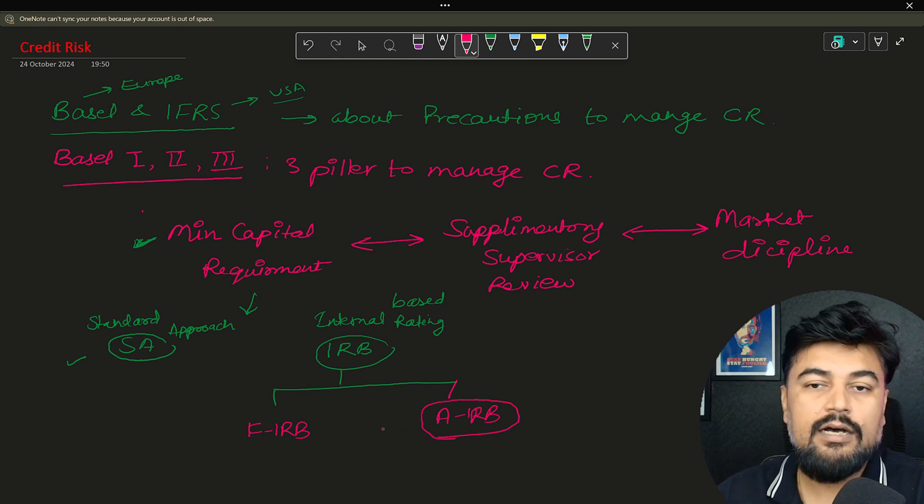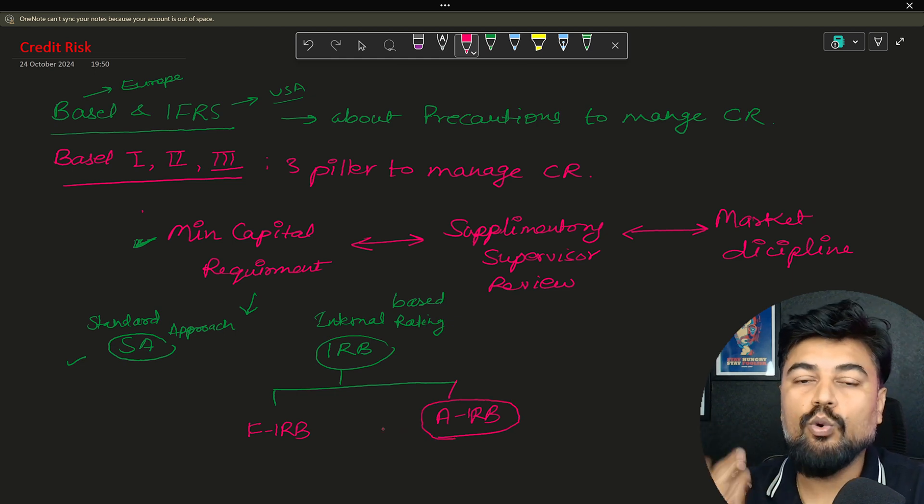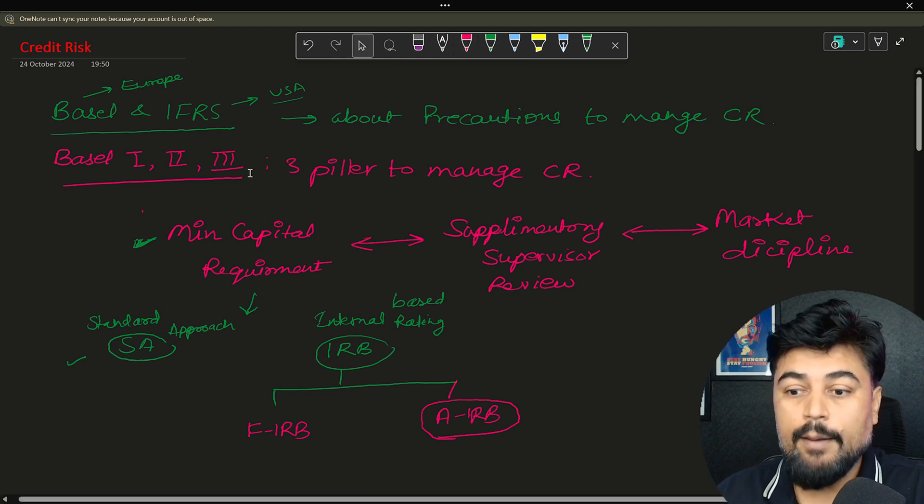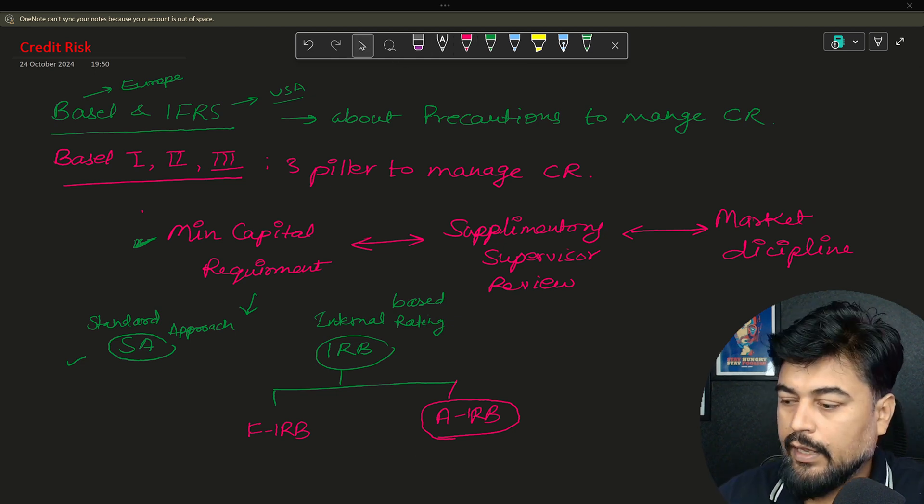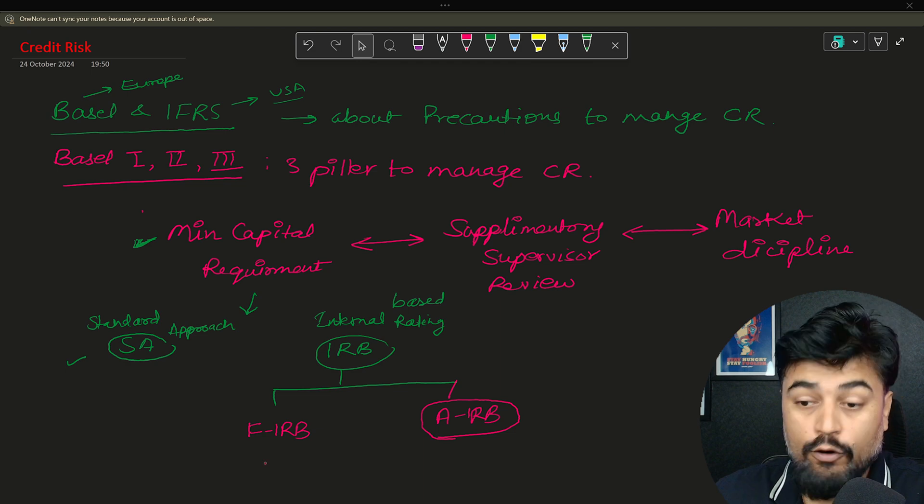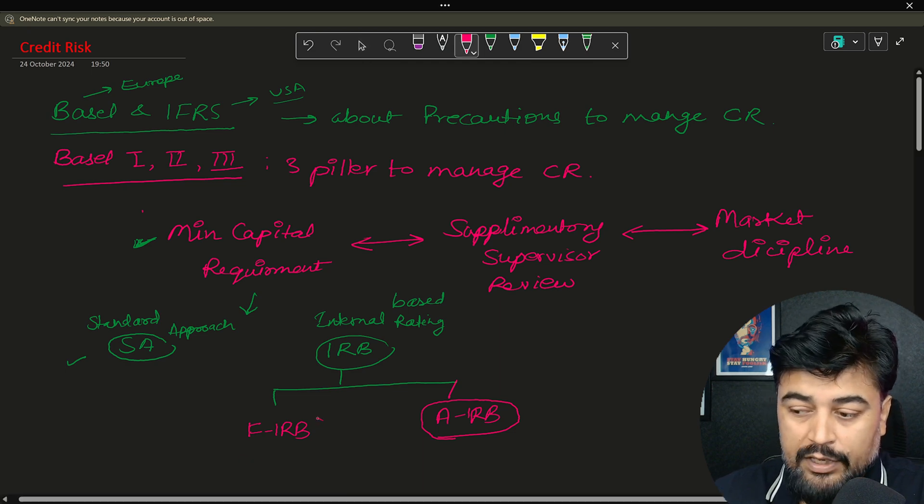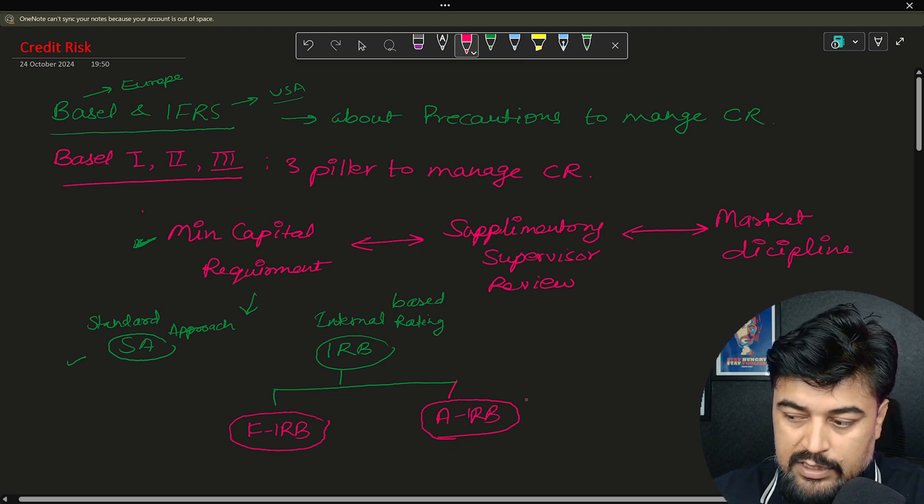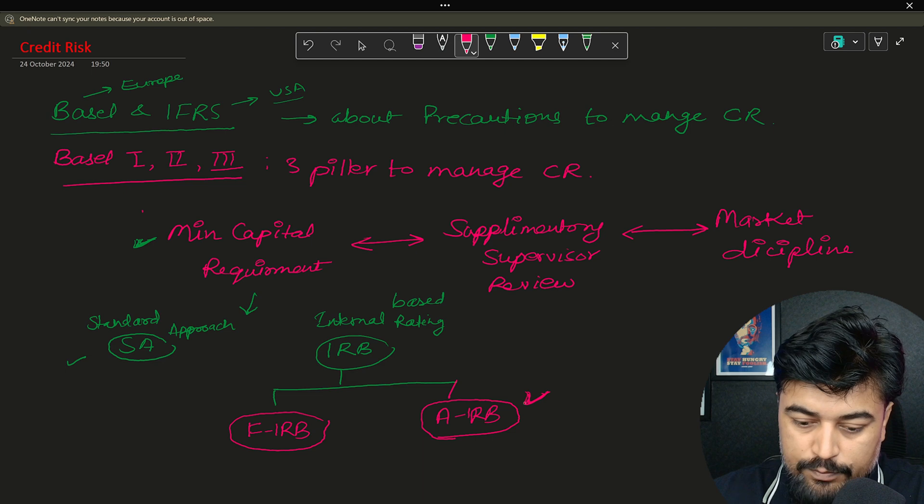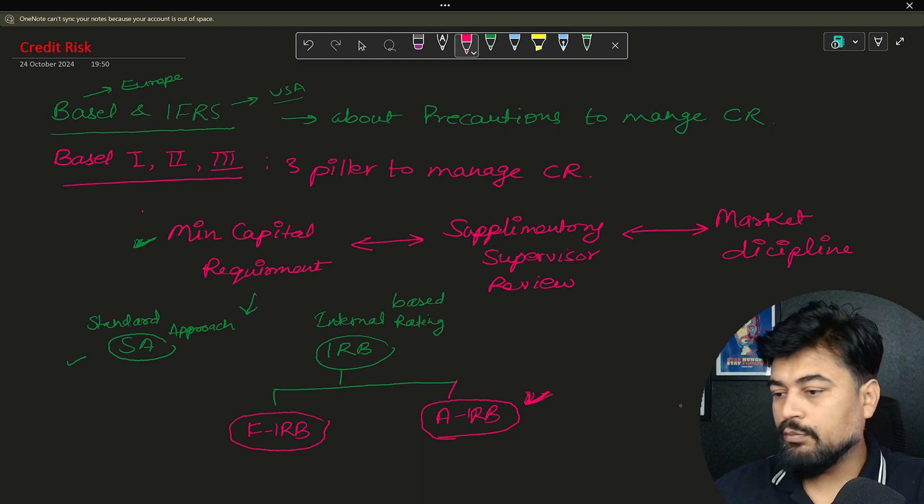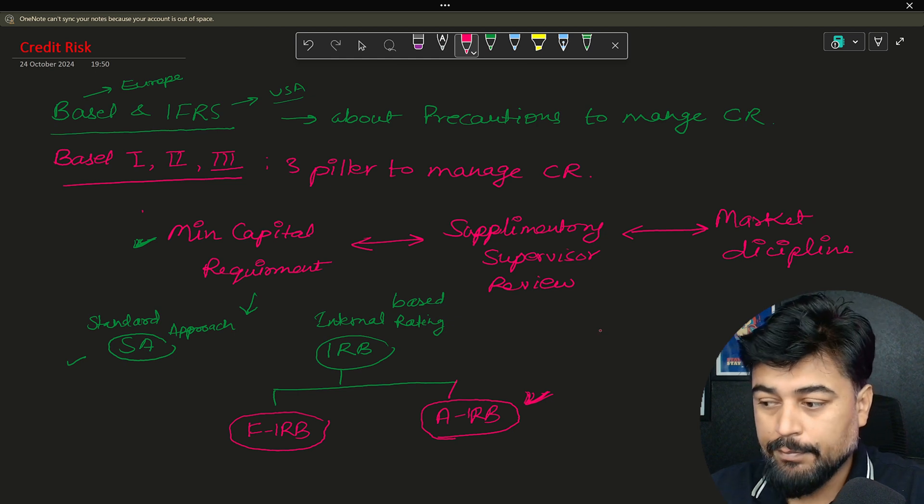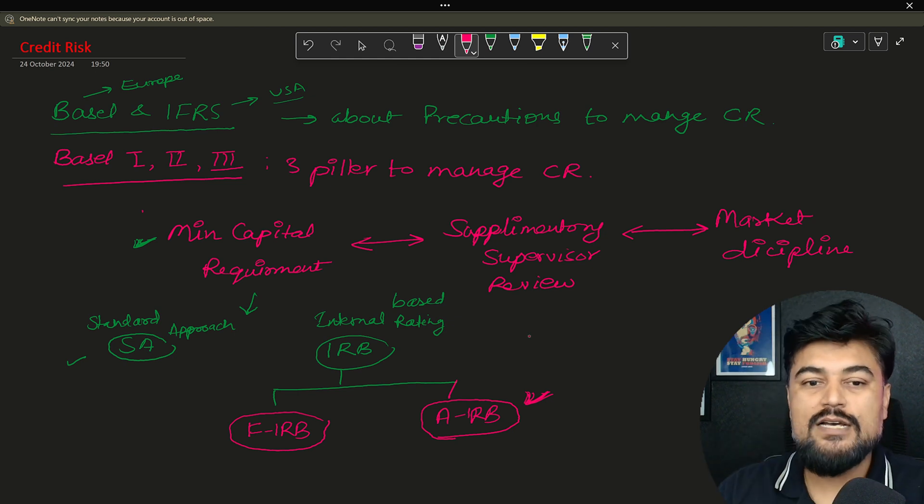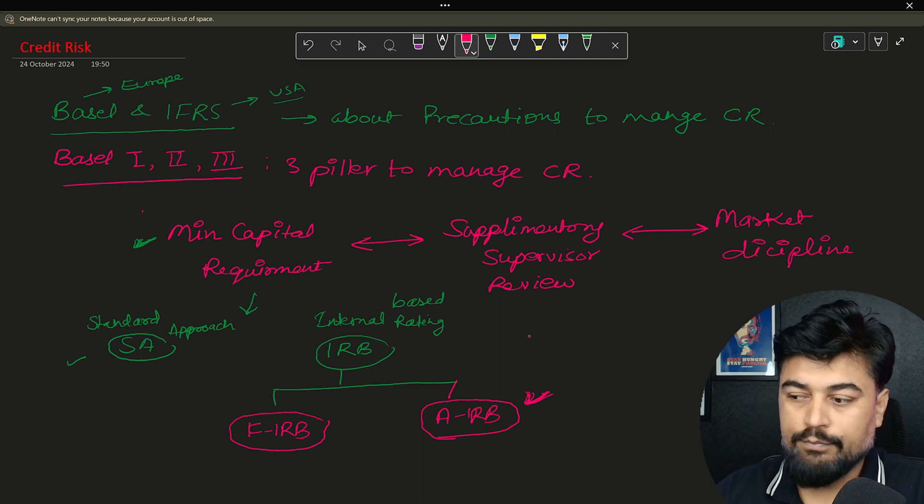These are the two types. Now what is F-IRB and A-IRB? This is more useful - this is the approach which is used more in banks, that is advanced internal rating based approach. And F-IRB stands for foundation internal rating based approach, and this one is more advanced, so that's why this is used more.